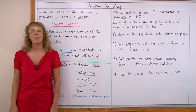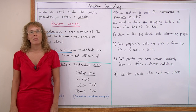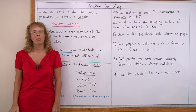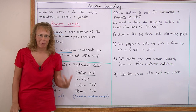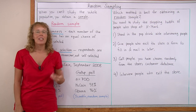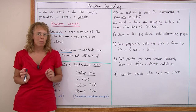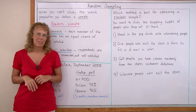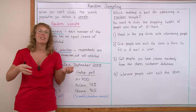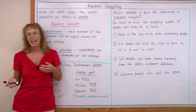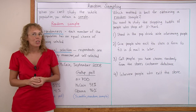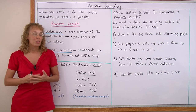Hello, my name is Maria Miller from MathMamOther.com. In this lesson we are going to study random sampling. What is sampling? It is a method of studying something when you cannot study the whole population. For example, if you want to study what US people think about something, you cannot go and ask all those millions of people. So you use a sample.